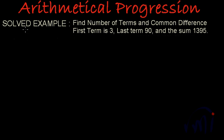So what we are provided with? We are given first term, which we call a, is equal to 3. Last term, which we call as l, is equal to 90. And sum, which is s, is equal to 1395. And what we have to find? We have to find number of terms, that is n, and we have to find the common difference, which is d.